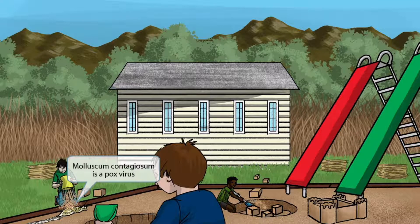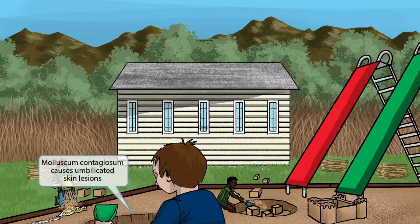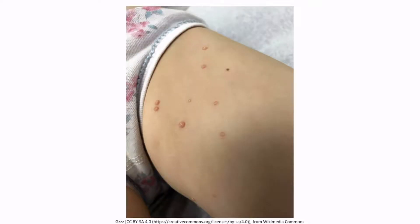A mischievous kid is pouring sand on a poor slug. Mollusca is a phylum of invertebrate animals including slugs, so think of this slug as representing the phylum Mollusca, which helps you remember that molluscum contagiosum is another member of the poxviruses. One classic clinical feature of molluscum contagiosum is umbilicated skin lesions — defined as having a small central area of depression. We've shown a deep hole in the sand to represent this. The lesions are small raised papules with small areas of depression at their center, which is what is meant by an umbilicated lesion.